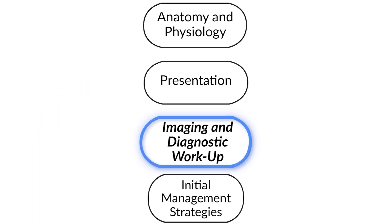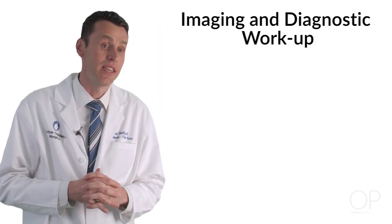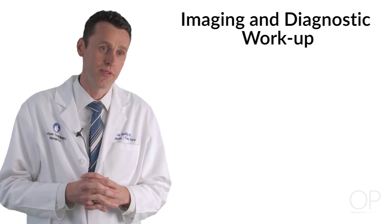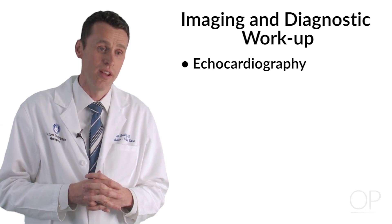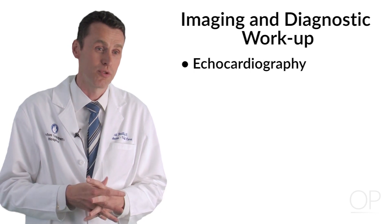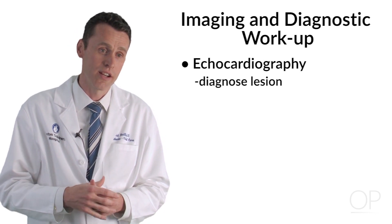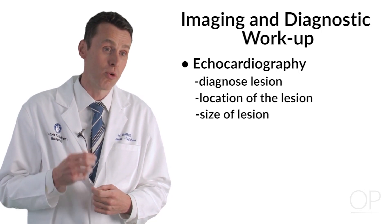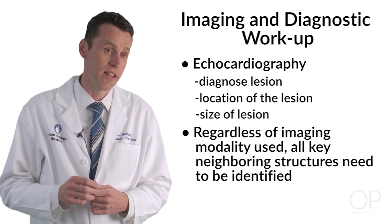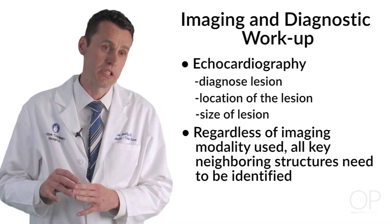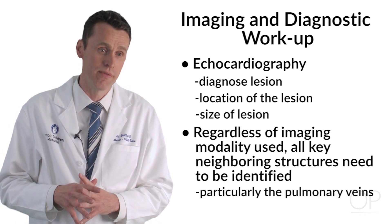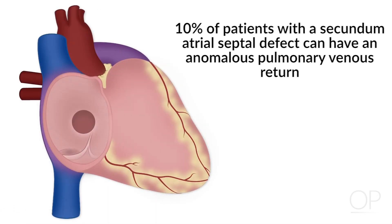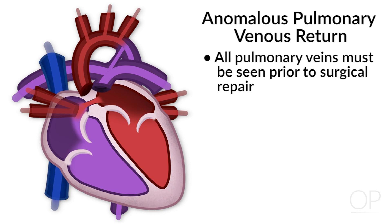Imaging and Diagnostic Workup. Imaging is a key component of identifying and diagnosing atrial septal defects. Echocardiography is the benchmark for diagnosing these lesions, as we're usually able to get adequate windows to diagnose the lesion itself, its location, and size. An important concept regardless of the imaging modality used is that all key neighboring structures need to be identified, particularly the pulmonary veins. Ten percent of patients with secundum atrial defects can have anomalous pulmonary venous return, so it's important that all pulmonary veins are seen prior to surgical repair.